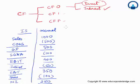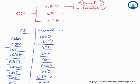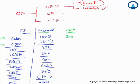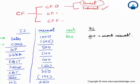This income statement is on an accrual basis of accounting, meaning these figures may not reflect actual cash inflows or outflows. For example, sales were recorded as 1,000, but let's assume only 800 was actually received in cash. The remaining 200 goes to the balance sheet as accounts receivable — a current asset representing cash yet to be received.